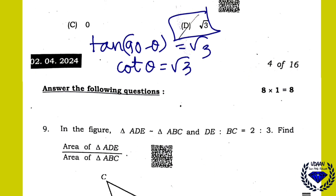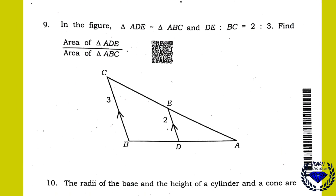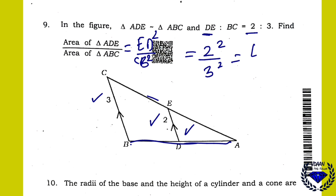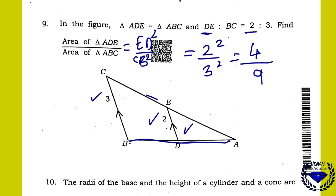Now the one-mark questions. In the figure, triangle ADE and triangle ABC are similar. DE:BC = 2:3. To find the ratio of areas: area of triangle ADE / area of triangle ABC = (DE/BC)² = (2/3)² = 4/9.